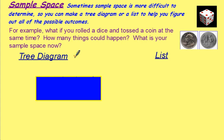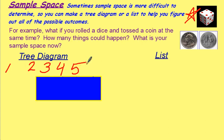To think this through, first think about how many things would happen when you roll a dice. You could roll a 1, a 2, a 3, 4, 5, or 6. Now think through what will happen with your second event — flipping a coin. You can either land on heads or tails, right?